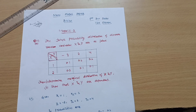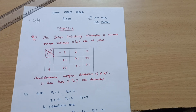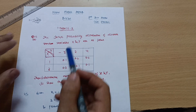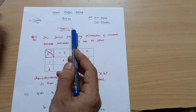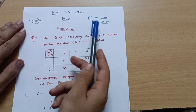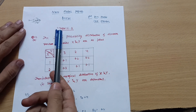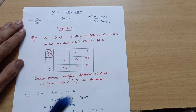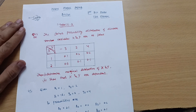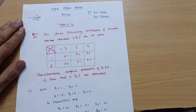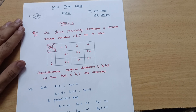Hello everyone and welcome back to my lecture. Dear friends, we are discussing the new model question paper for the CSC stream students, mathematics subject. Today I will be explaining model second question number 3a, which is about joint probability distribution. I have explained this in a previous lecture — you can watch that — and today I will just brush up and remind you how to solve this.